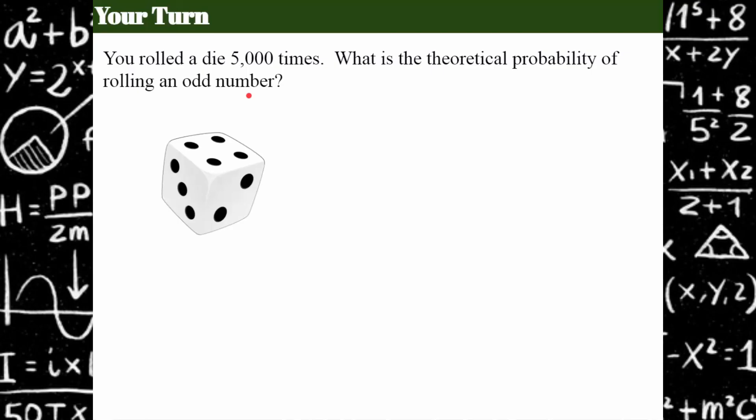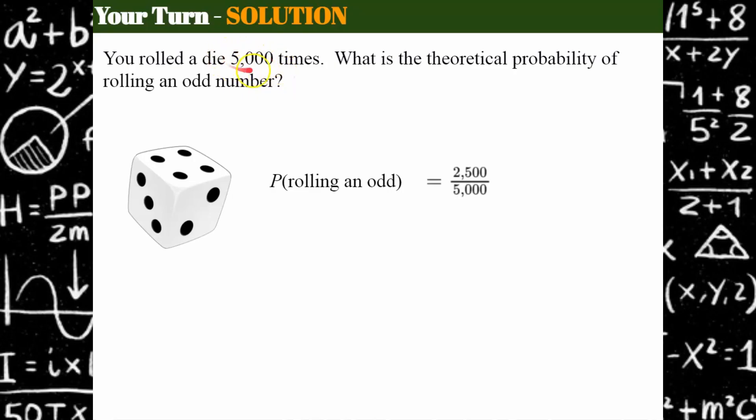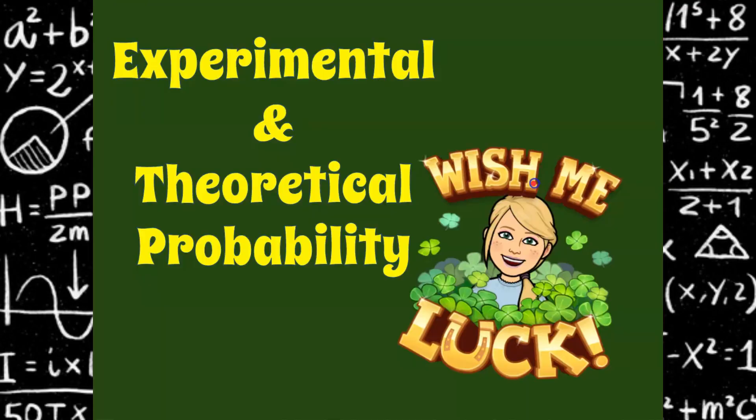Welcome back. Let's see how you did. Notice I didn't give you any data this time. The probability of rolling an odd would be half the time. We would expect that we would roll an odd 2,500 times out of the 5,000, which is half or 50% of the time. That's the difference between experimental and theoretical probability.